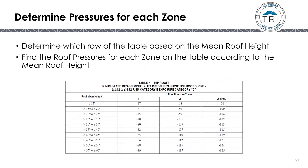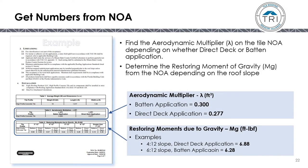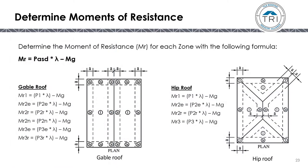Once you have found the correct table, determine which row to use based on the mean roof height to find the roof pressures for each zone. Next, find the Notice of Approval for the tile product to get the aerodynamic multiplier, represented by the symbol lambda and measured in cubic feet. There are typically two values: one for batten application and one for direct deck application. You will also need the restoring moment due to gravity depending on the roof slope.